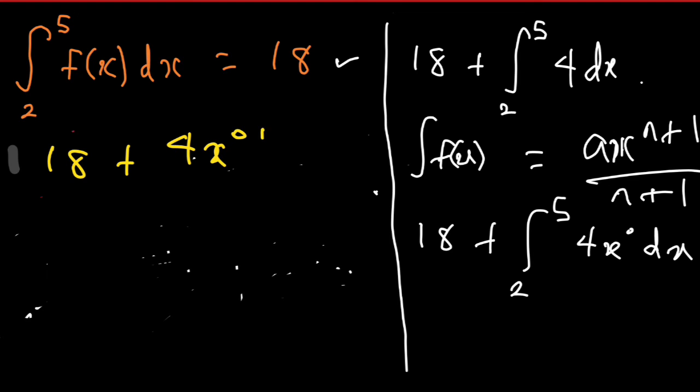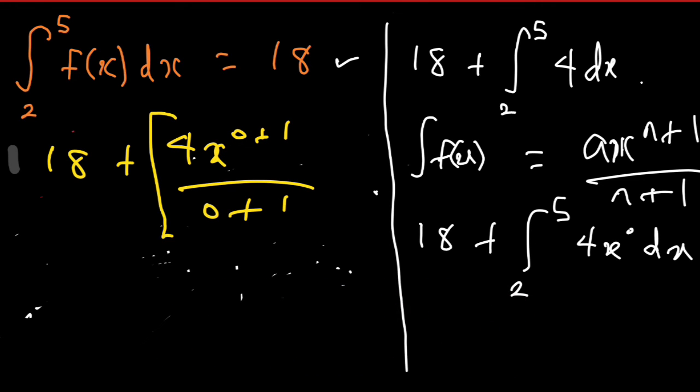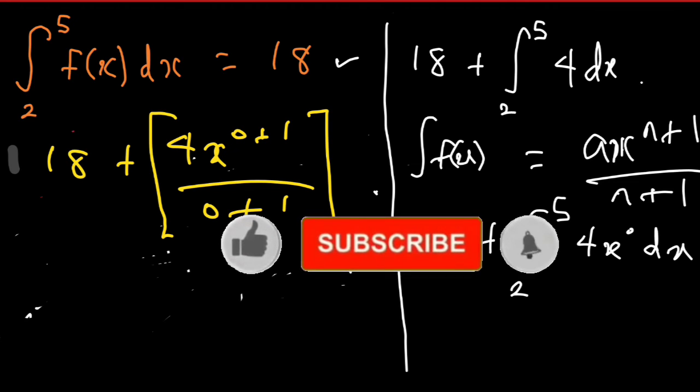So from here I have 18 plus the integral which will give rise to 4x^(0+1) over (0+1), everything evaluated from 2 to 5.